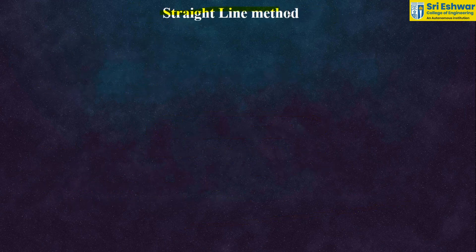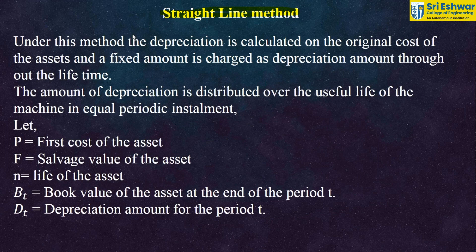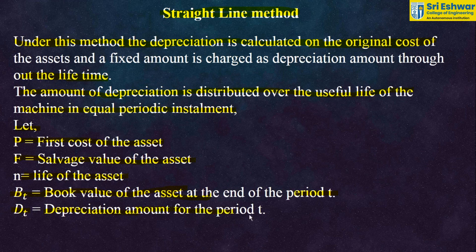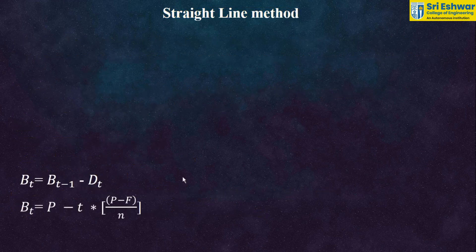First let us see the straight line method. Under this method, depreciation is calculated on the original cost of the asset, and a fixed amount is charged as the depreciation amount throughout the lifetime. The amount of depreciation is distributed over the useful life of the machine in equal periodic installments. Let P = first cost of asset, F = salvage value, N = life of the asset, Bt = book value at end of period t, and Dt = depreciation amount for period t.